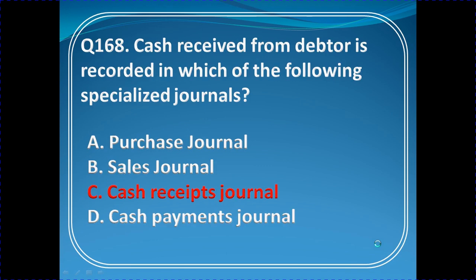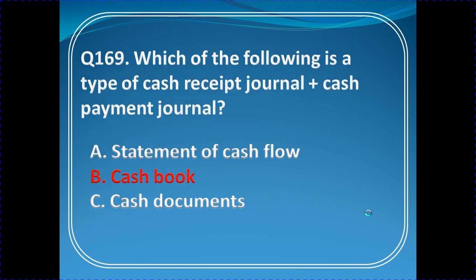Question 168: Cash received from debtors is recorded in which of the following specialized journals? Options: purchase journal, sales return, cash payment journal, or cash receipt journal. The answer is cash receipt journal — that is nothing but the cash book.